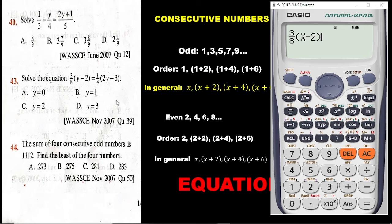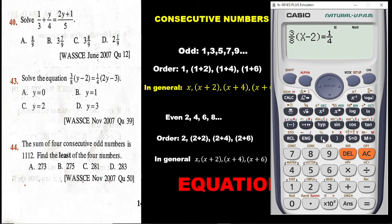Then we have 1 over 4, which is a fraction — click the fraction button, put 1 on top, go down and enter 4. Leave the denominator by clicking the right arrow key. Now bring the bracket open and we have 2y, replacing y with x: press 2, then alpha x, then minus 3. Close the bracket. The equation has been fully entered.